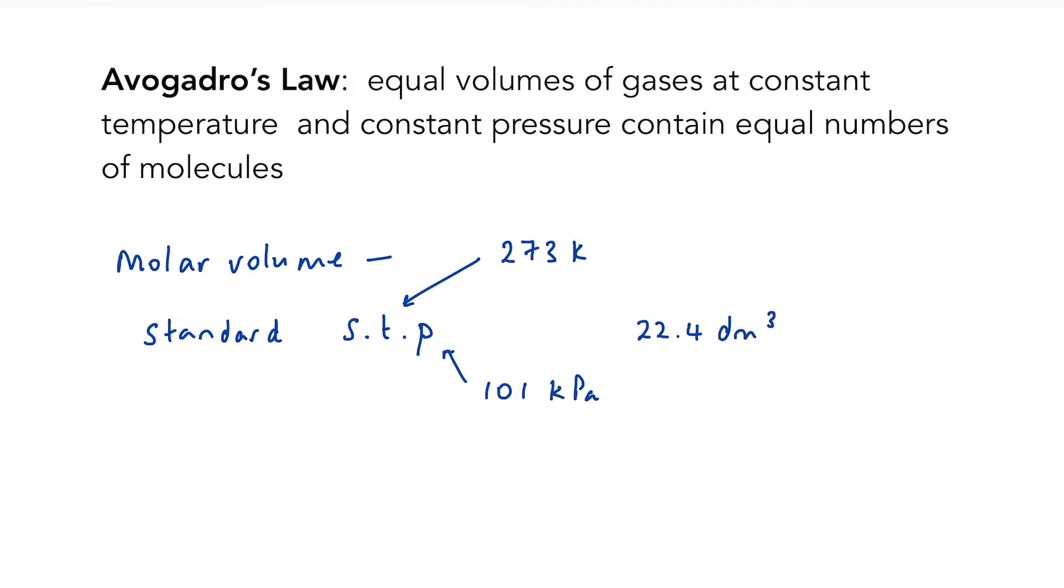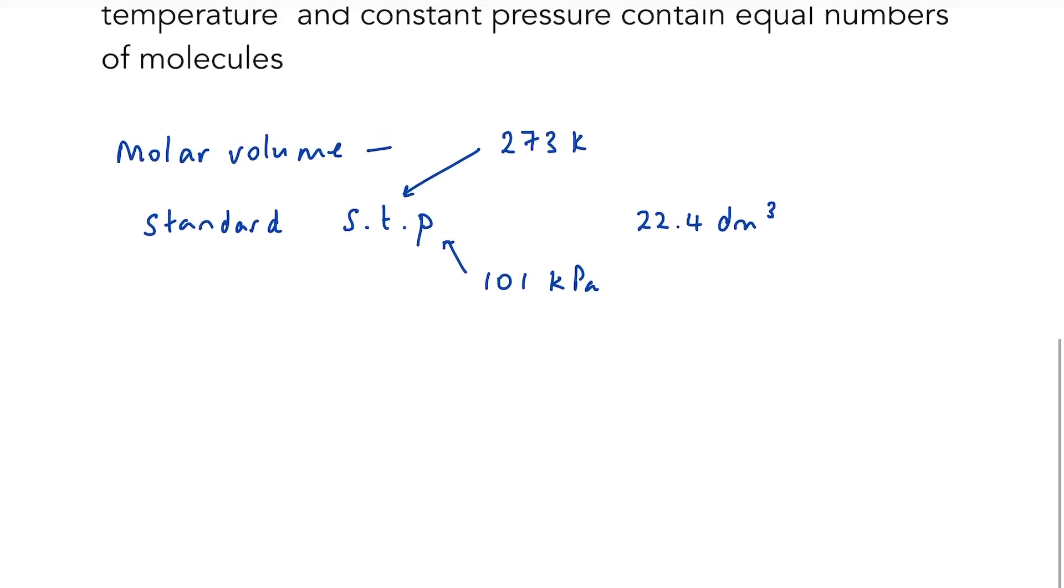The second molar volume we need to be aware of is at room temperature and pressure, known as RTP. In this case, the temperature is 25 degrees C, or 298 K, and the pressure remains at 1 atmosphere or 101 kilopascals.